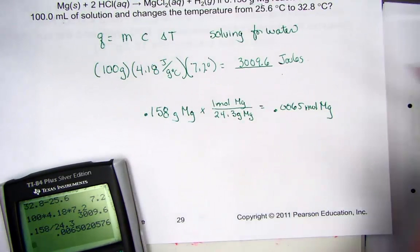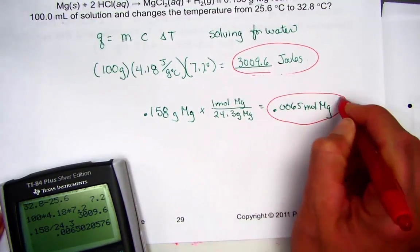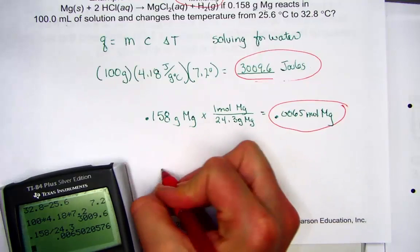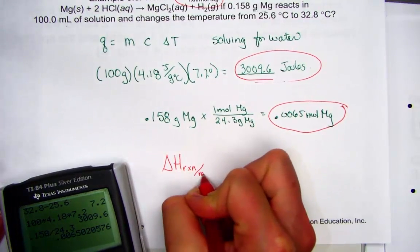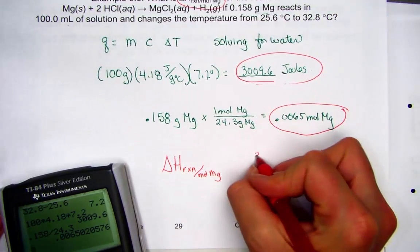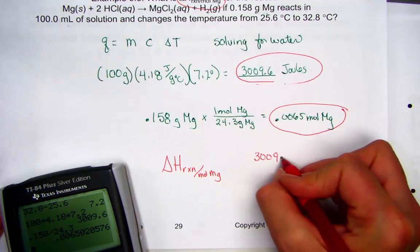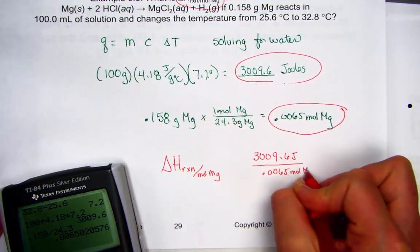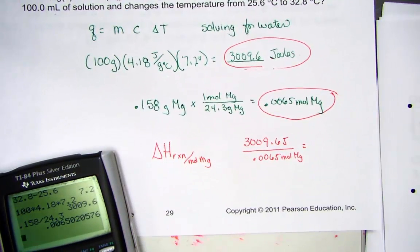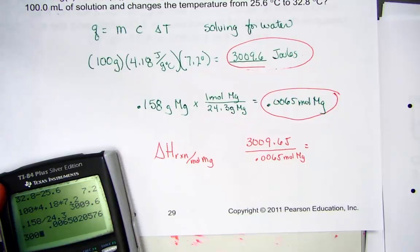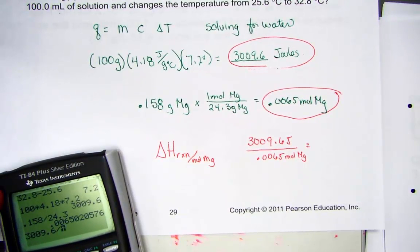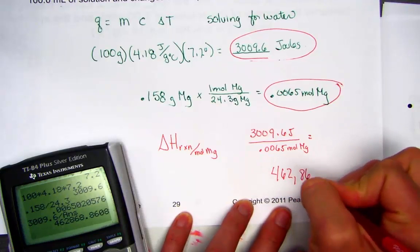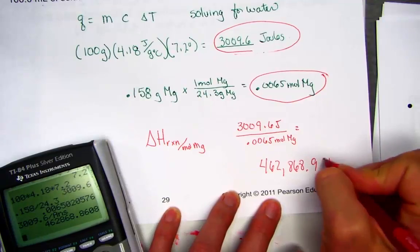The delta H for the reaction per mole of magnesium is found by taking 3009.6 joules and dividing by the moles of magnesium (0.0065), giving us the desired units of joules per mole. That calculation gives a large number: 462,868.9 joules per mole of magnesium.